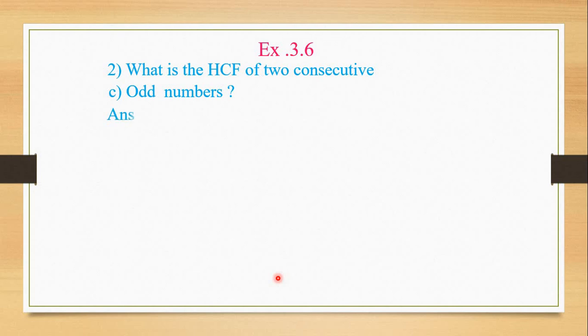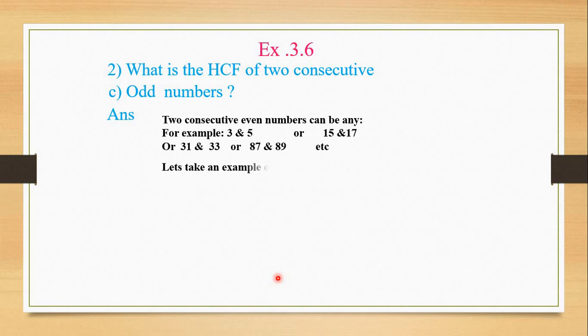The next question is the same. For Exercise 3.6, what is the highest common factor of two consecutive odd numbers? In the earlier question we had even numbers, now we take odd. So two consecutive odd numbers could be any: 3 and 5, 15 and 17, 31 and 33, 87 and 89, etc.